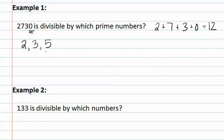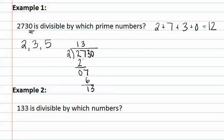We now need to determine if we have found all of the prime numbers. Let's start by dividing each of the numbers we've already found into this number. Starting with 2: 2 divides into 2,730. 2 goes into 2 once, bring down the 7; 2 goes into 7 three times giving 6; 2 goes into 13 six times giving 12; and 2 goes into 10 five times, giving us 1,365.